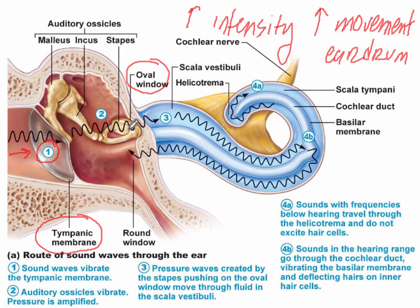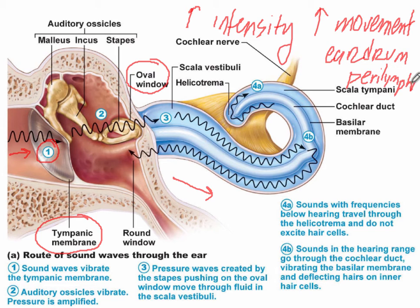Since this oval window is smaller than the tympanic membrane, that's going to increase the force here — kind of like the idea that a sharp spiked heel for a woman's shoe is going to create a lot more force on the floor than the heel of a men's shoe. So the movement of the fluid is going to be amplified because of that increase in pressure. The perilymph is what we find in the scala tympani, and that fluid is going to move back and forth. The higher the frequency of the sound, the greater chance that it's going to bypass this area and go directly through to the cochlear duct. And the basilar membrane is the membrane on the bottom of the cochlear duct, and that's going to vibrate.